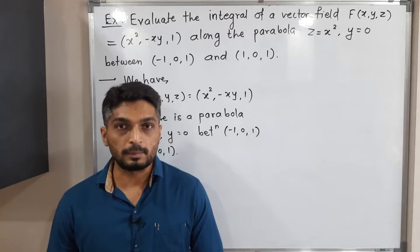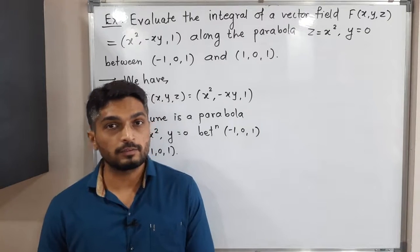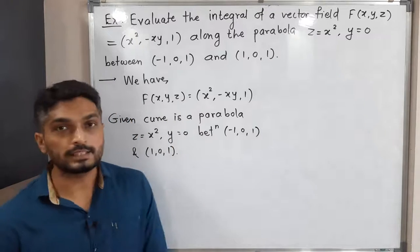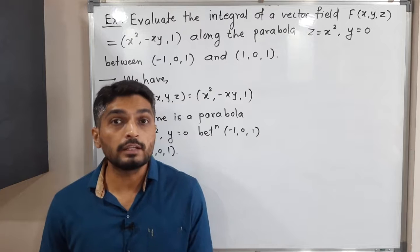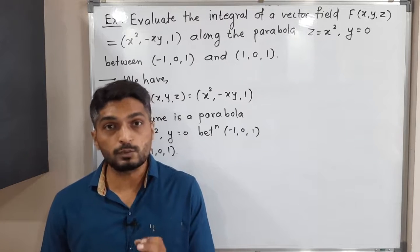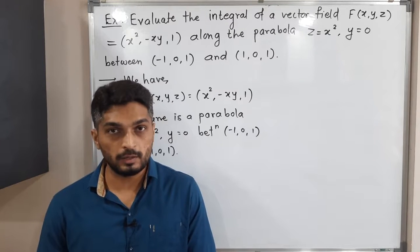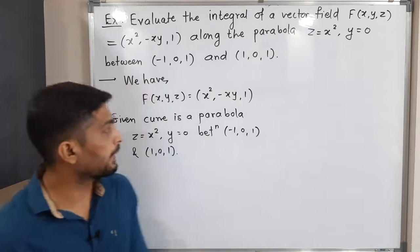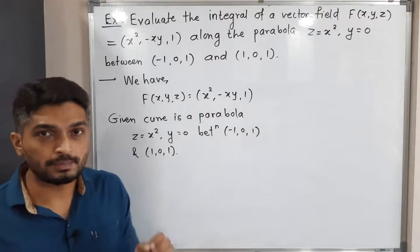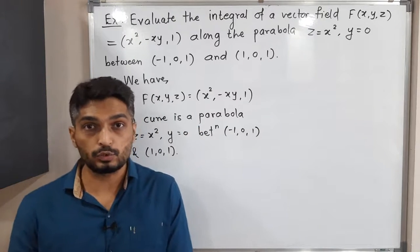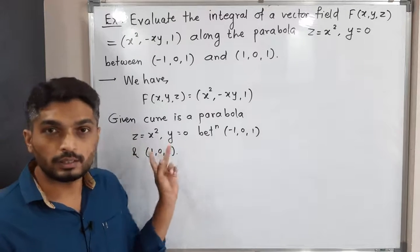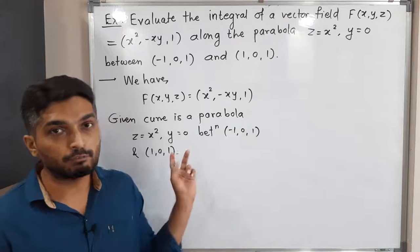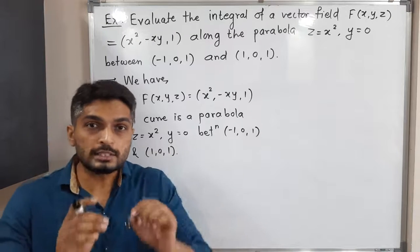Let us discuss this example. We have a vector field F defined as F(x, y, z) = (x², -xy, 1). We have to find the value of the line integral of this vector field along a given path. The given path is a parabola in ℝ³ — a three-dimensional parabola defined by z = x² and y = 0.